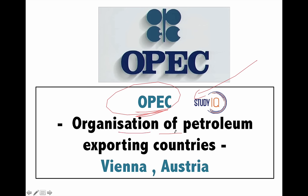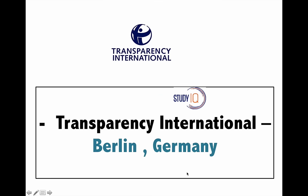Next is OPEC — the Organization of Petroleum Exporting Countries. These are all the countries that export oil, such as Saudi Arabia, Angola, Venezuela, etc. The headquarter of OPEC is in Vienna, the capital of Austria.